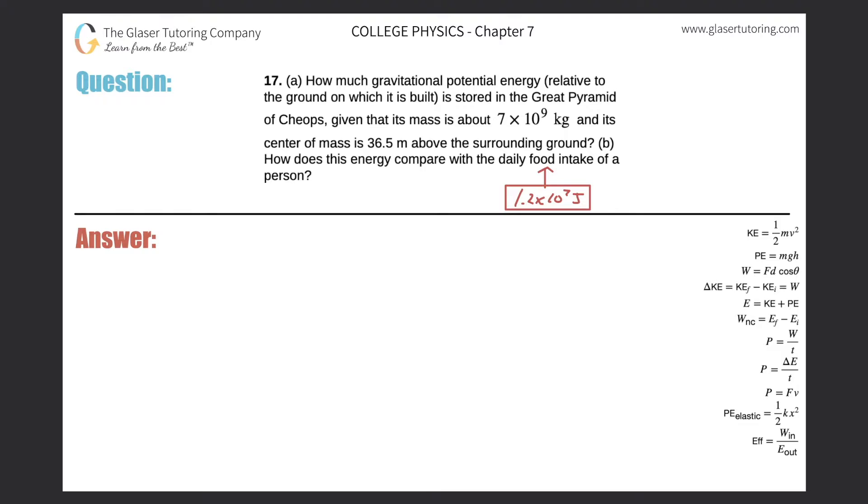Number 17, letter A. How much gravitational potential energy relative to the ground on which it is built is stored in the Great Pyramid of Cheops, given that its mass is about 7 times 10 to the 9 kilograms and its center of mass is 36.5 meters above the surrounding ground?